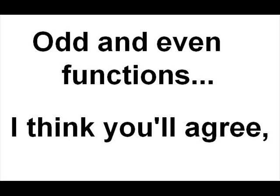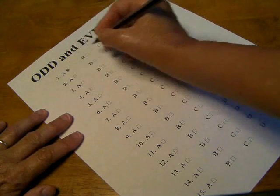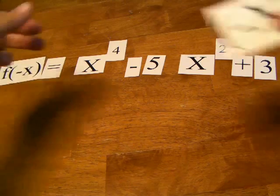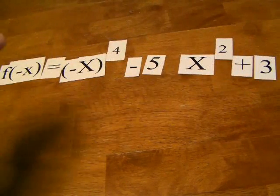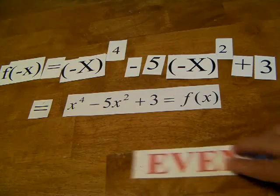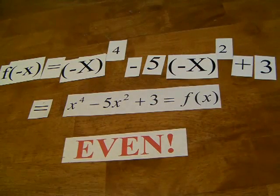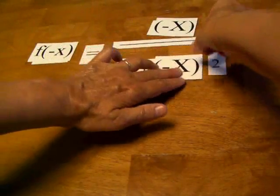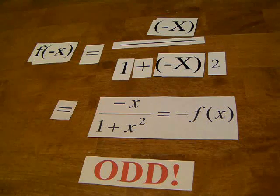Odd and even functions, I think you'll agree, have absolutely no ambiguity. So here is the skinny, here is the test: replace x with a negative x. If the function stays the same, then it's even — yeah, that's its name. If it's exactly the opposite of the original function, then it is odd.